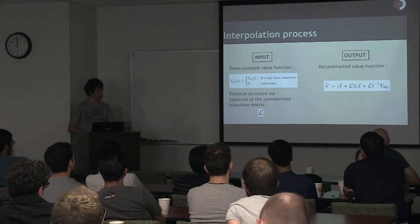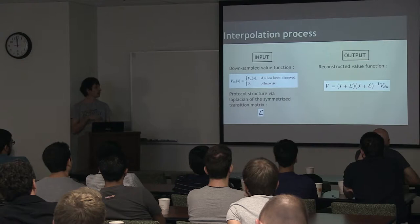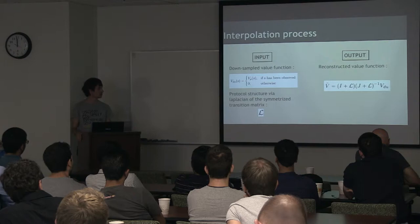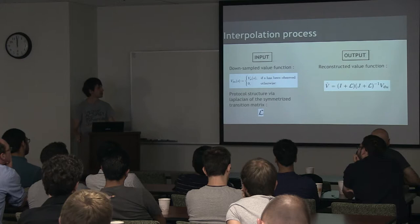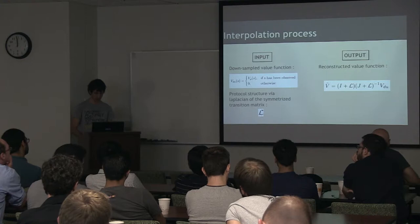What we want to do is, assuming that we already know the value of our function on a small set of nodes, and that we know also the protocol structure via the Laplacian of the symmetrized transition matrix, we want to reconstruct our value function using this formula interpolation.